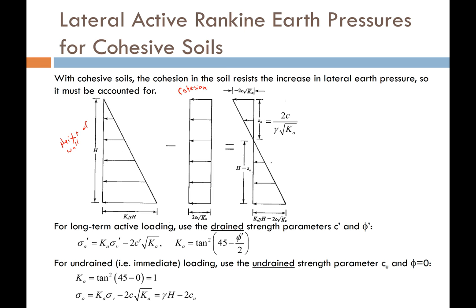The unique challenge with cohesive soils is that we have cohesion. If we're adding the effect of cohesion, it essentially acts in a manner that tries to hold the soil up by itself — cohesion does not want the soil to tip over. So we are going to subtract the cohesion component from our lateral earth pressures. That cohesion component is assumed to be a uniform load equal to 2 times the cohesion times the square root of our active earth pressure coefficient.